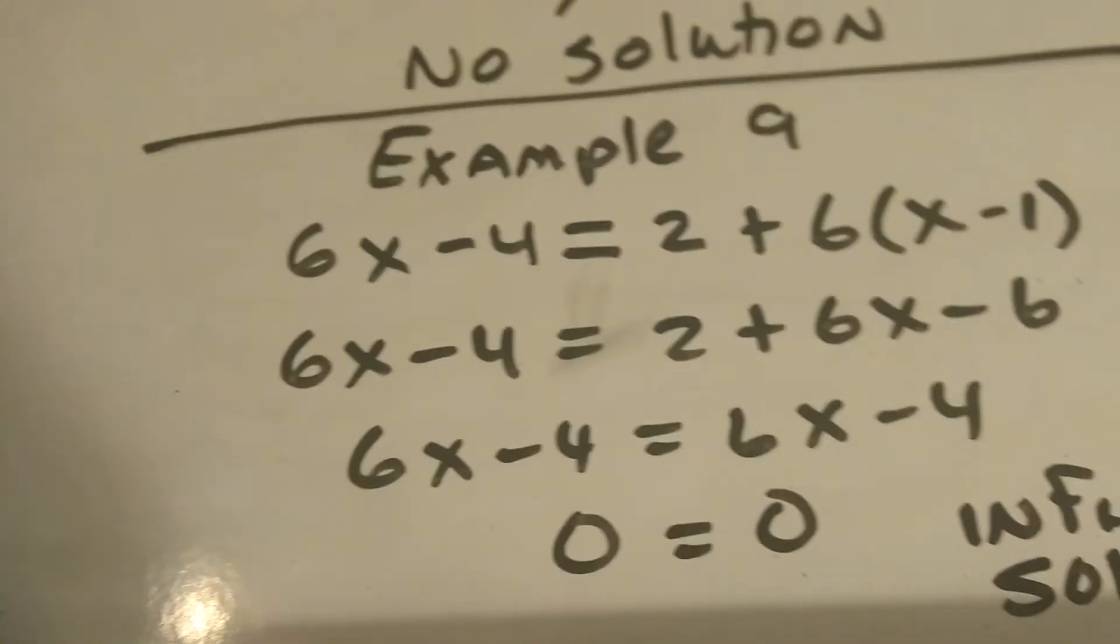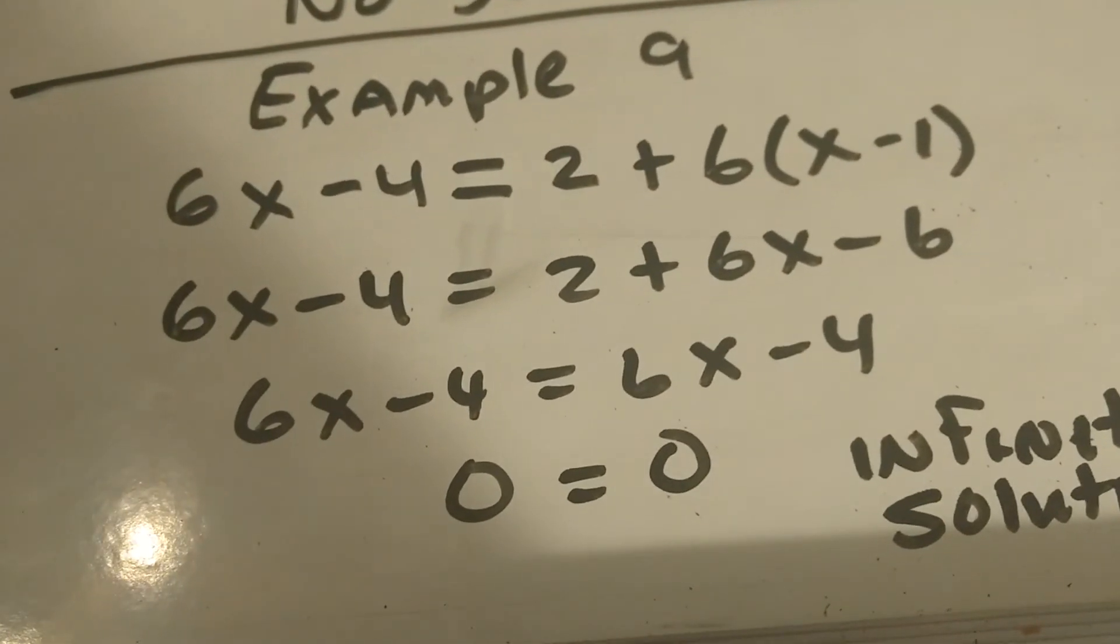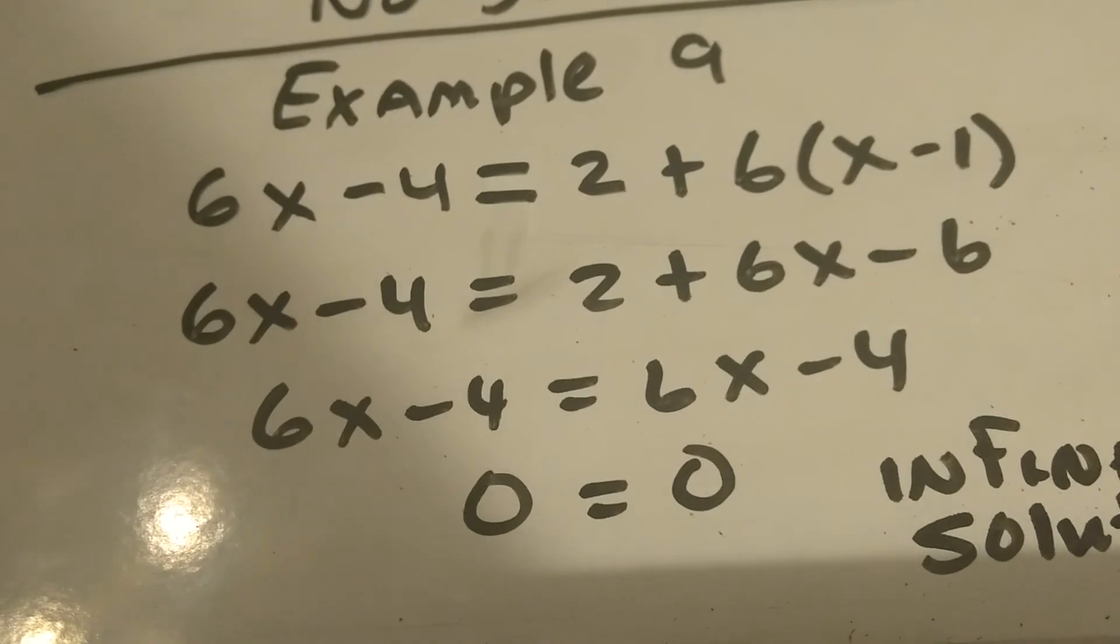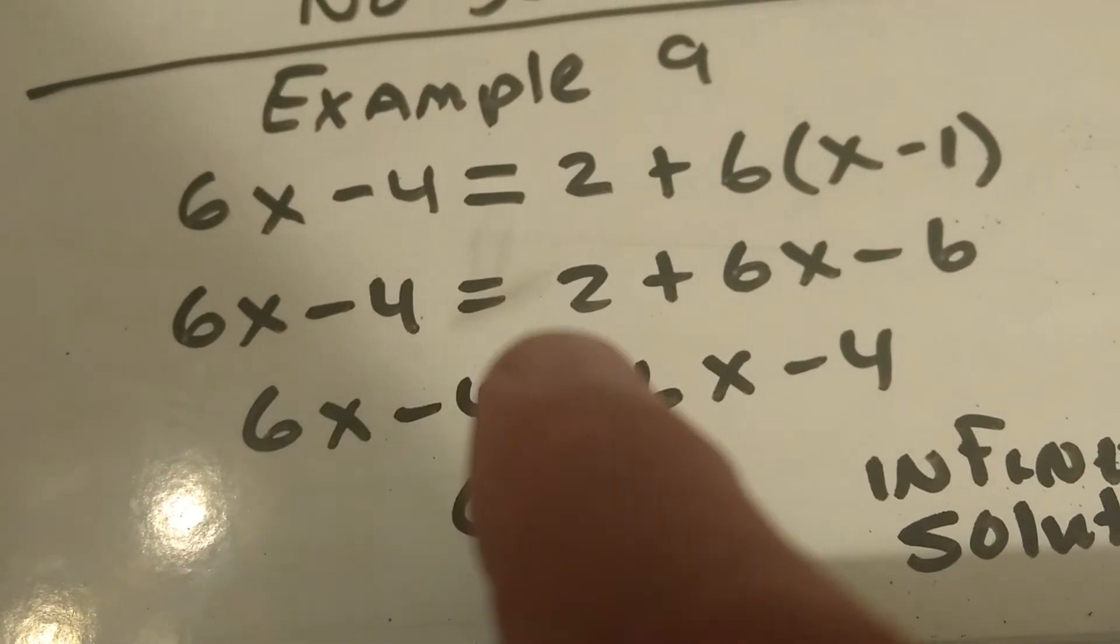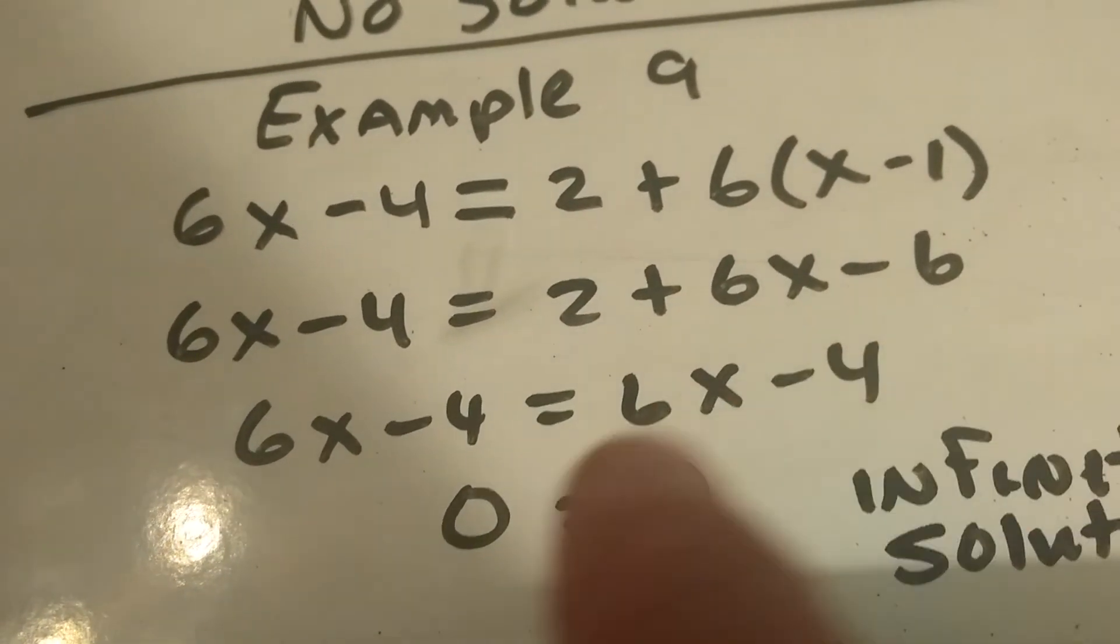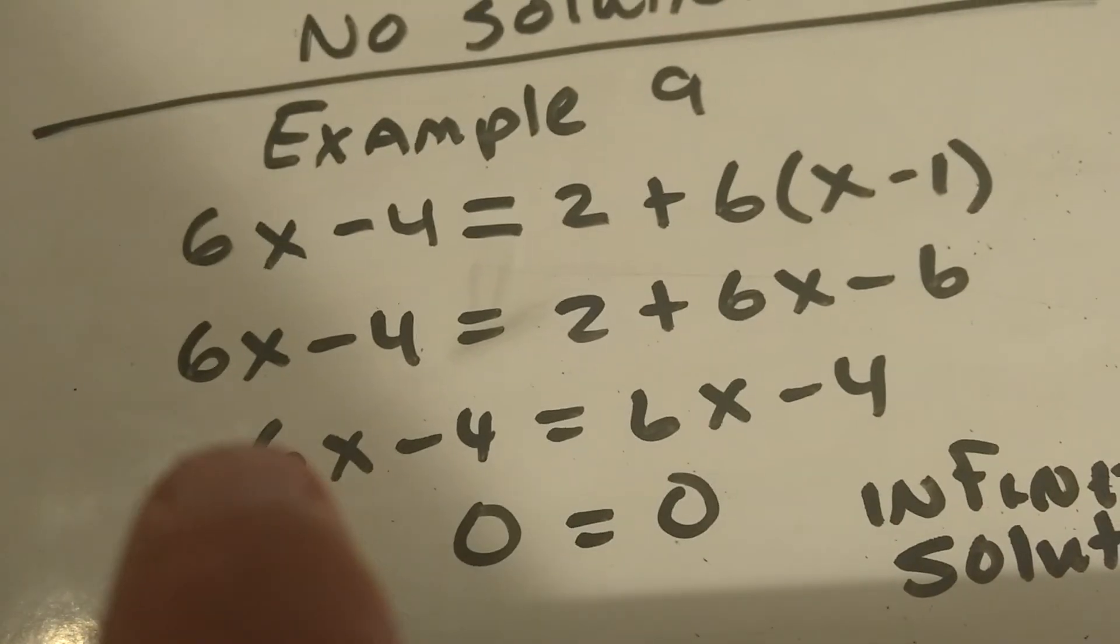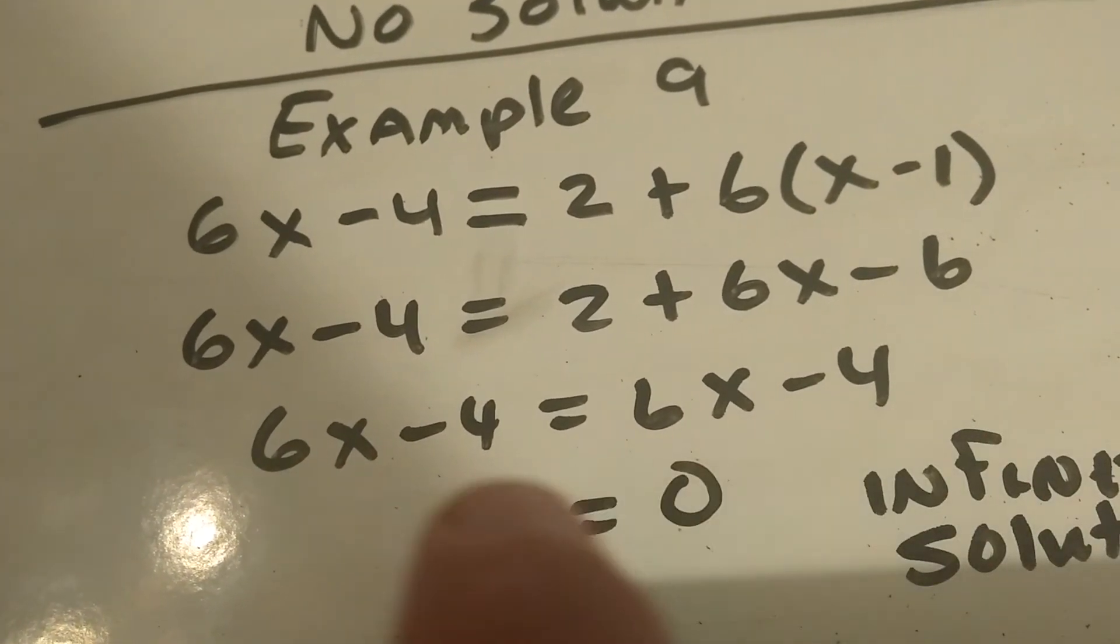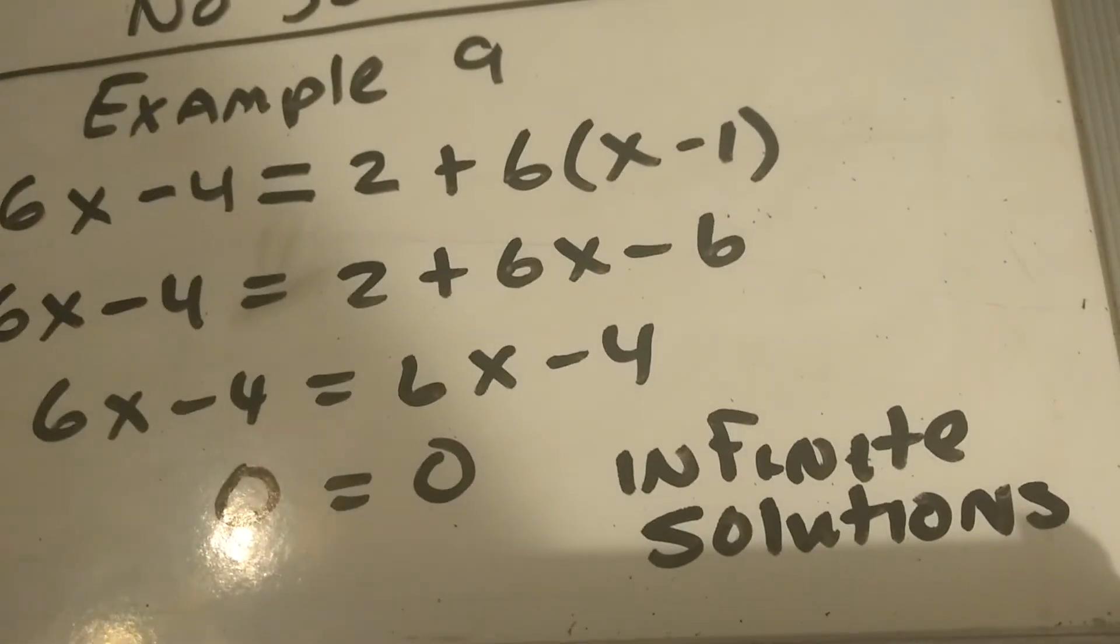On the other side of the coin, this is example 9, where 6x minus 4 equals 2 plus 6 times x minus 1. Again, distribute. So now we have 6x minus 4 equals 2 plus 6x minus 6. Collect like terms, I get 6x minus 4 equals 6x minus 4. So I subtract this 6x or add this 4. I get 0 equals 0, which means it's infinite solutions.